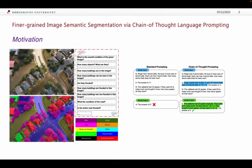For example: What's the overall condition of the given image? Then we continue to ask how many objects are there? What's the number of flooded buildings and non-flooded buildings?